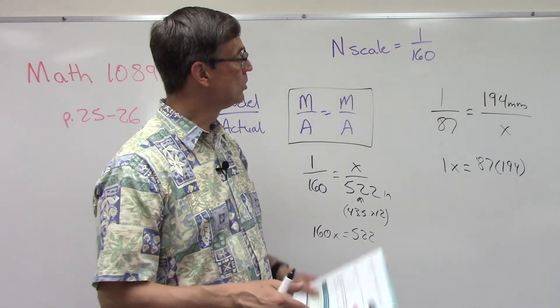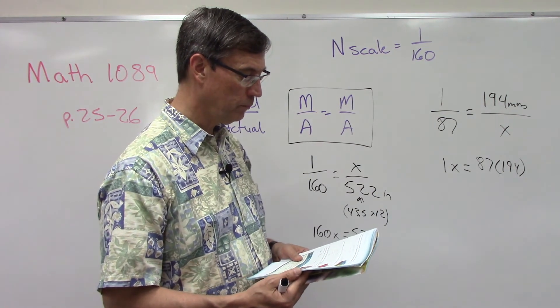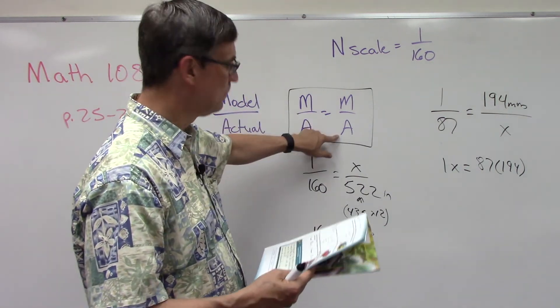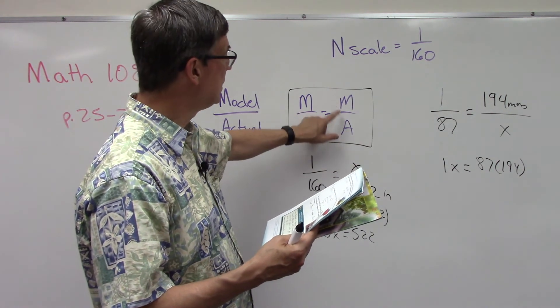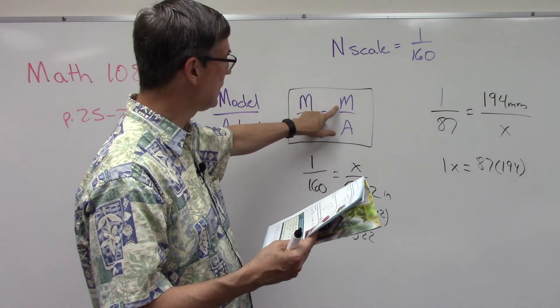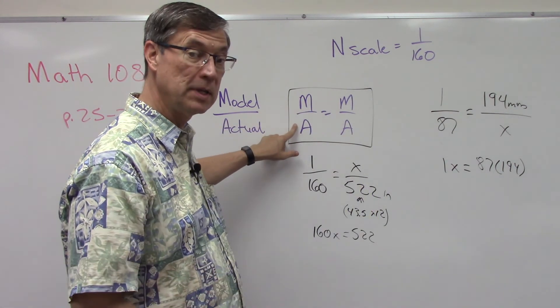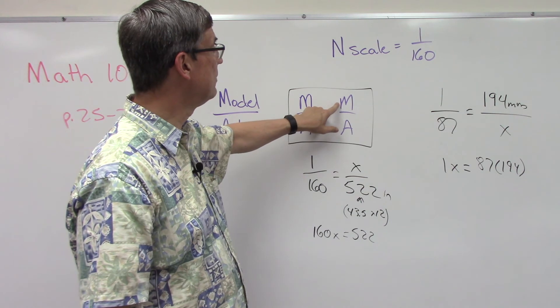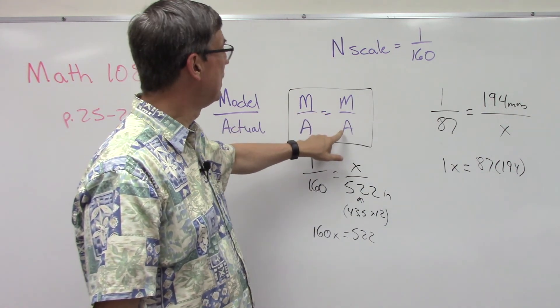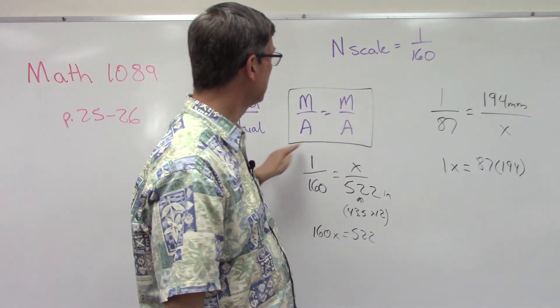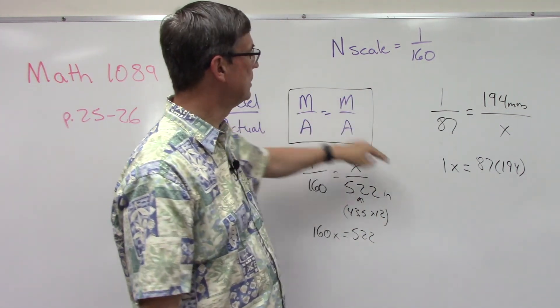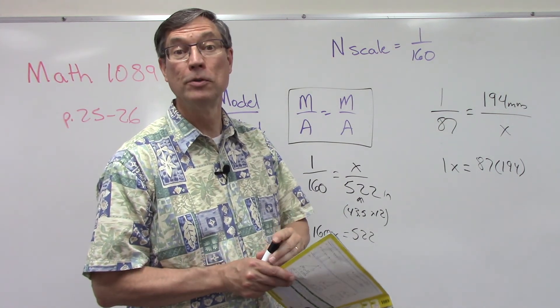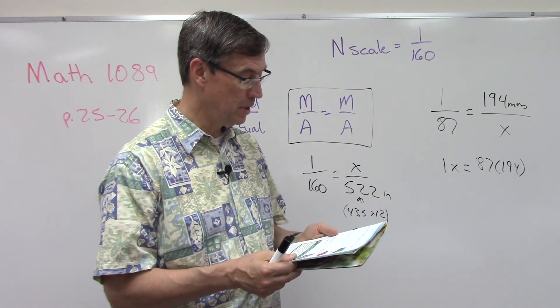On number three, just keep this in mind: the 5.5 inches is the model, and then it asks for the length of the actual car. So in that one you're going to do 1 over 25, so they give us a different scale, 1 over 25. And then the model is 5.5 inches, so that goes on the top for the model, and now you're solving for the actual. Remember the cross products - this times this equals this times this, just like we did for these two problems here. And hopefully that sets you up enough that you can do problems one, two, three, and even number four.